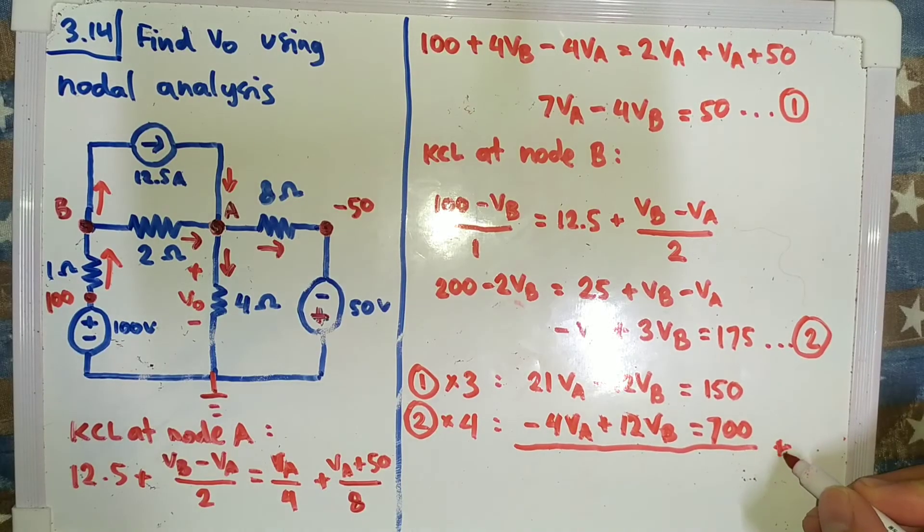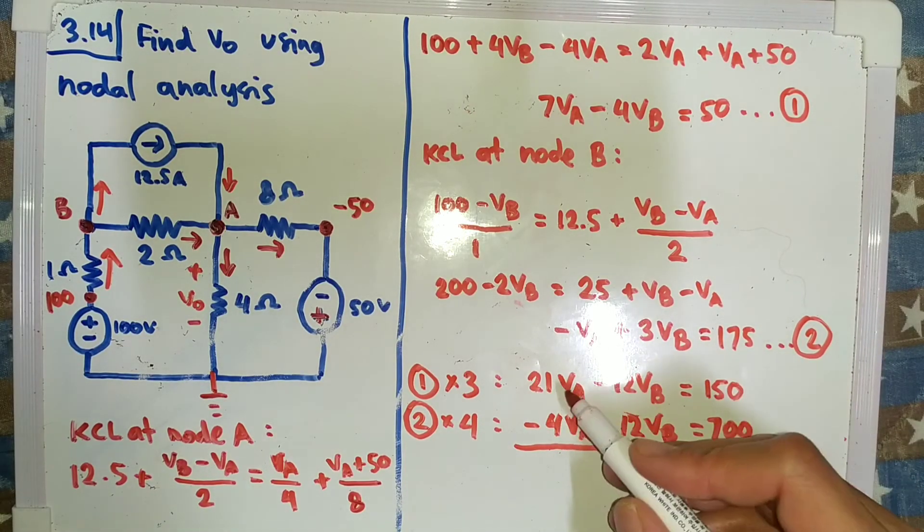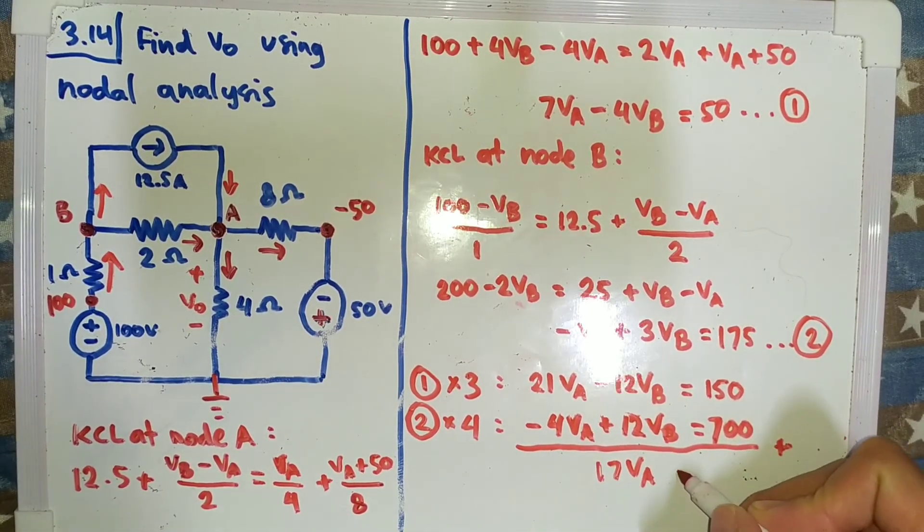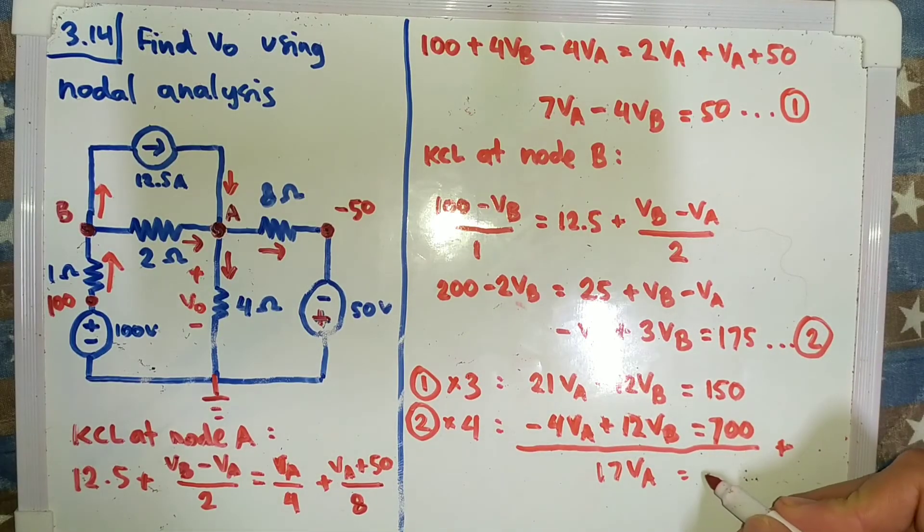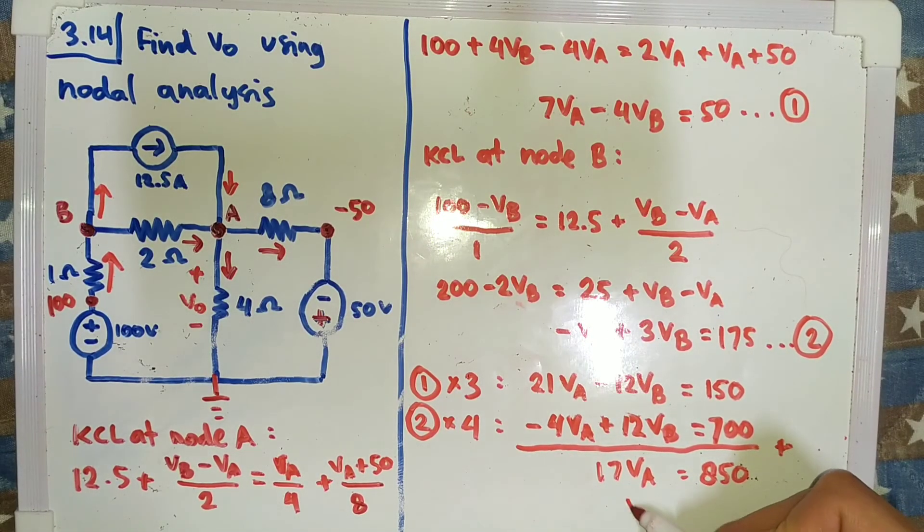And we can cancel this by adding the two, and we will get this one, 21 minus 4 is 17, so 17VA is equal to 850, and we can solve this.